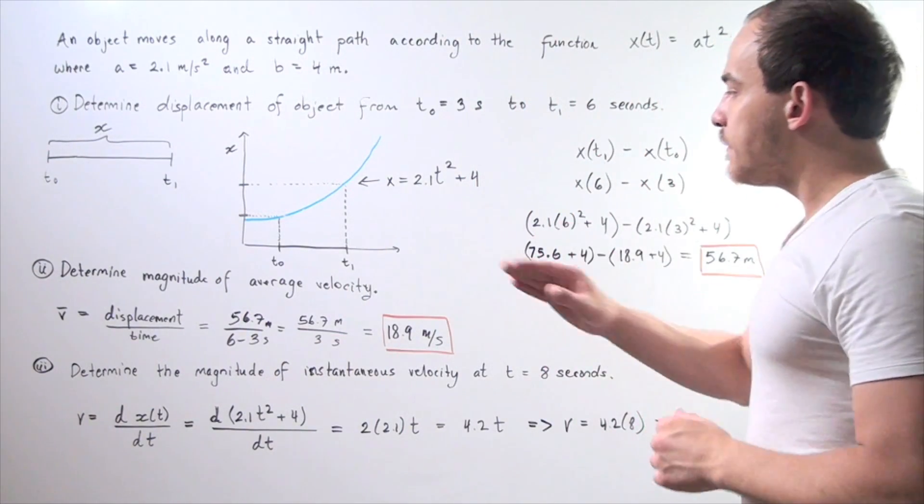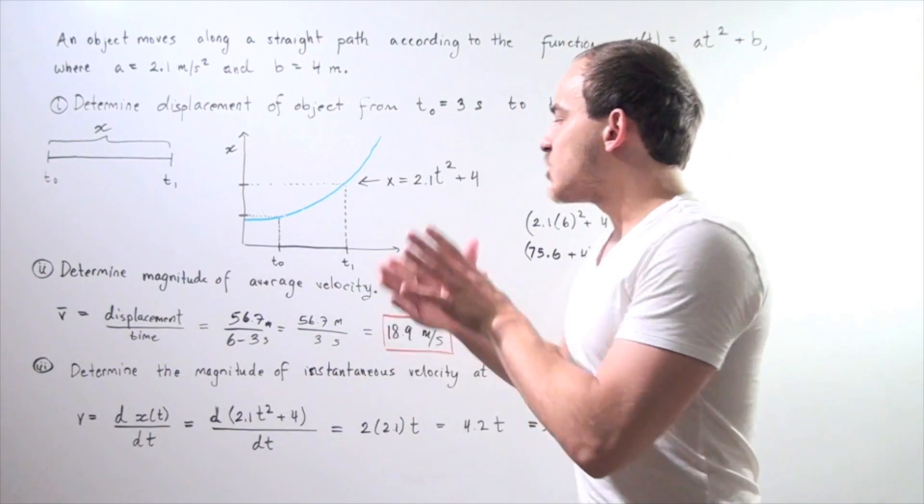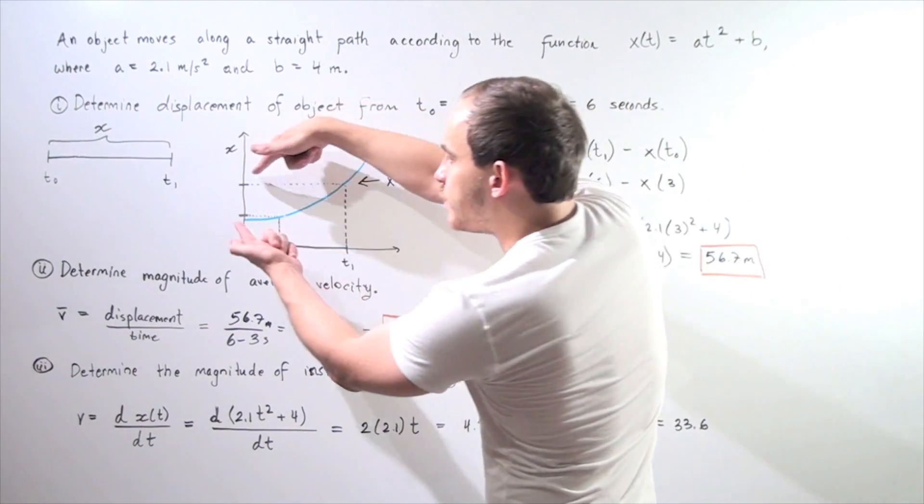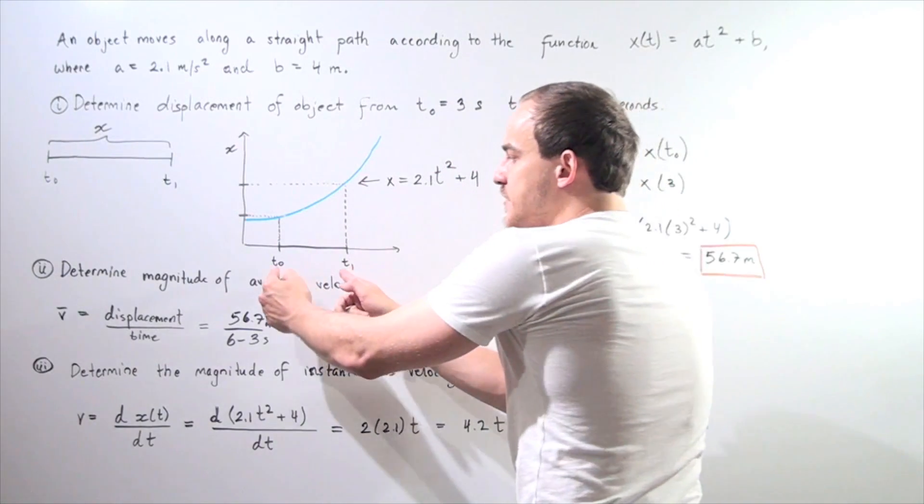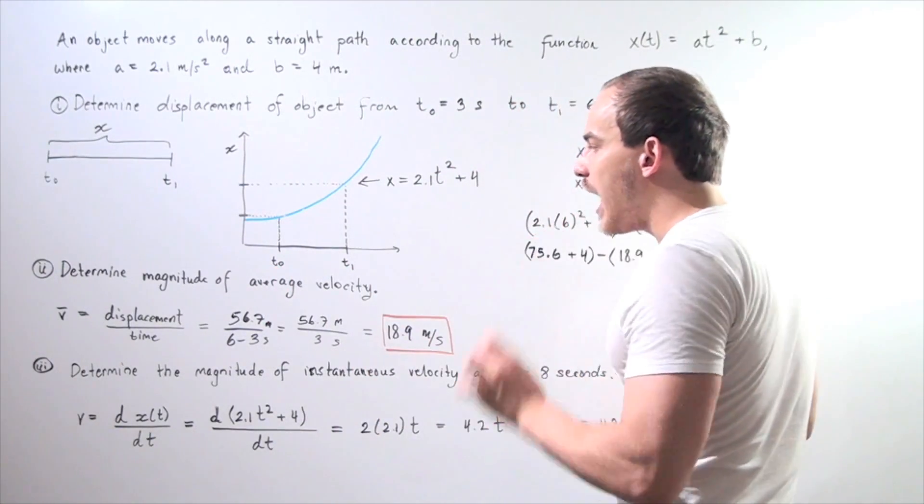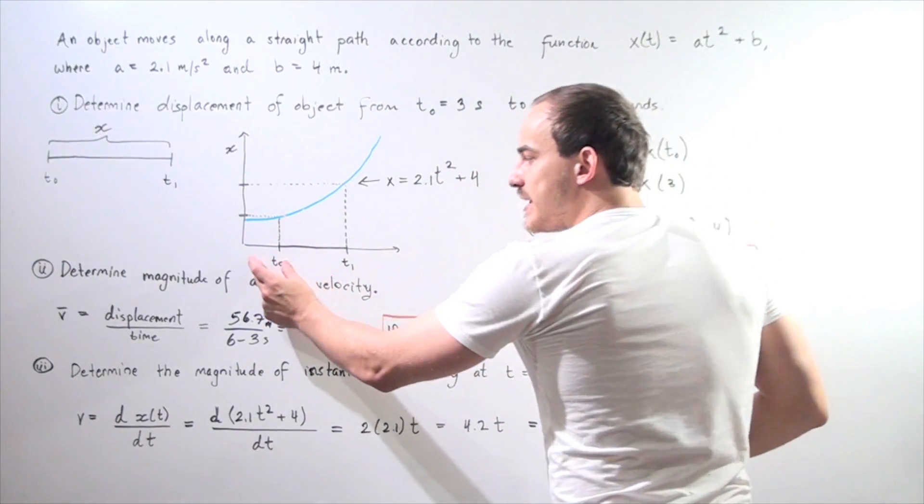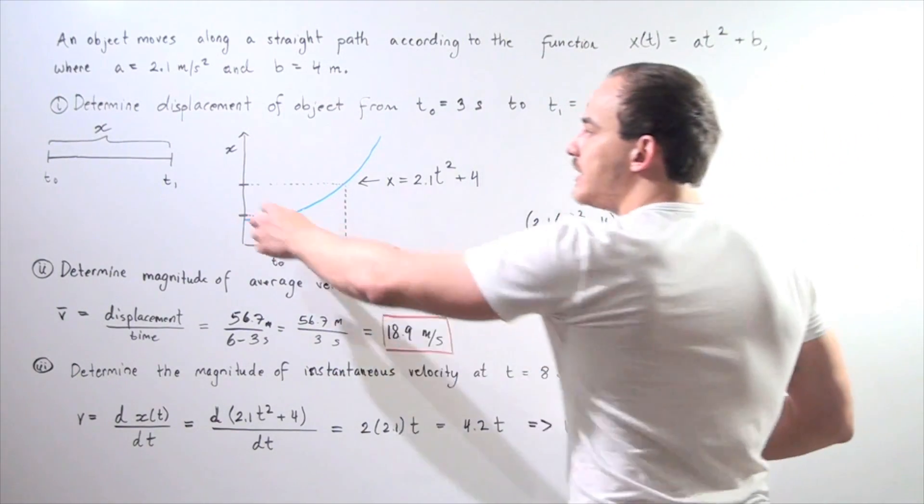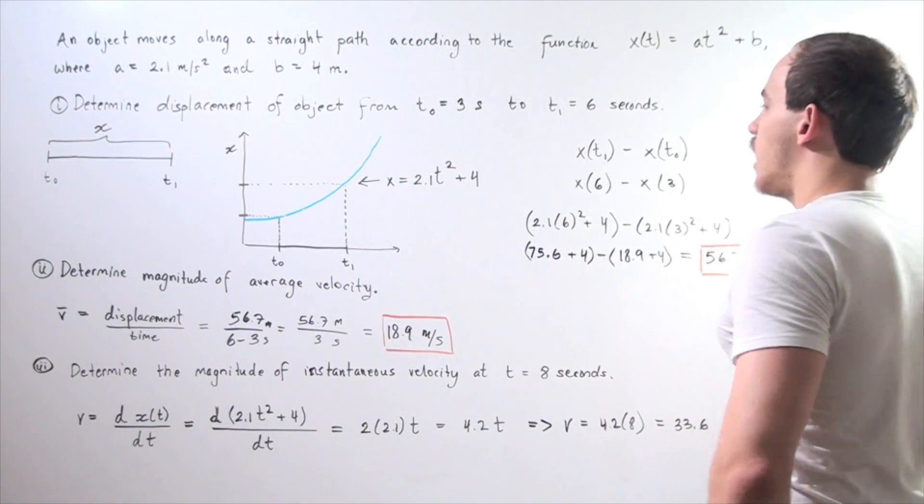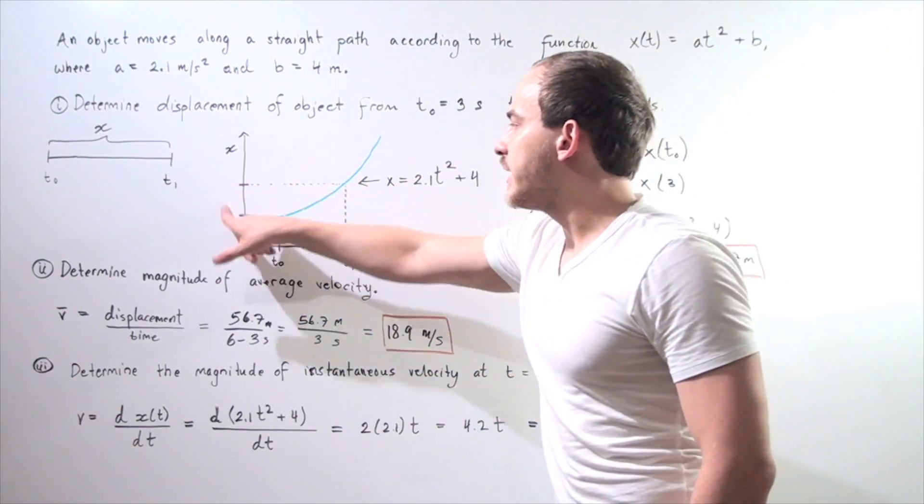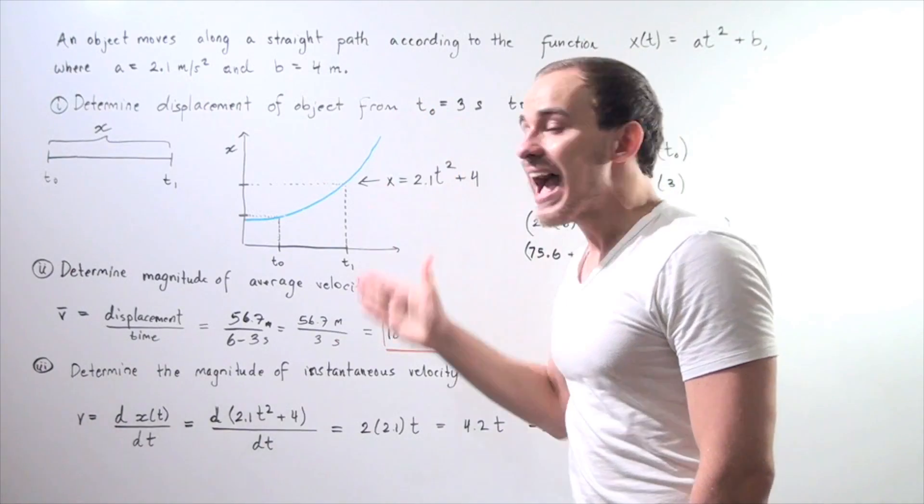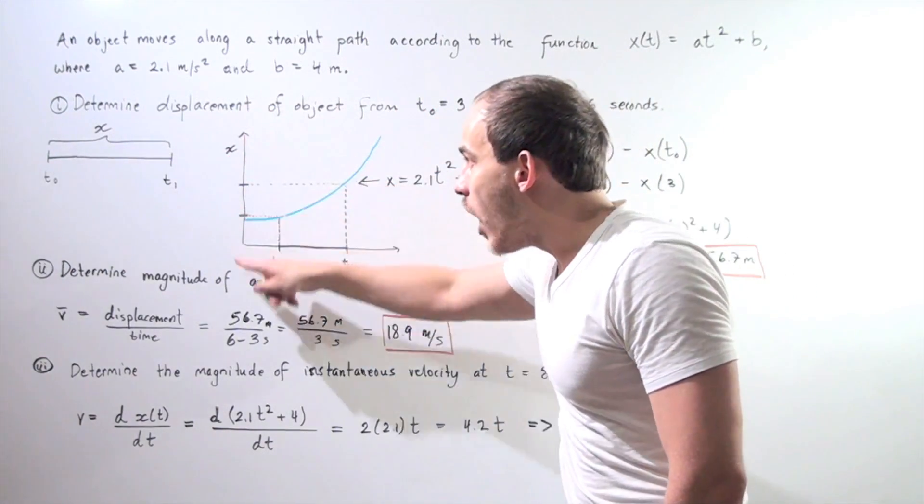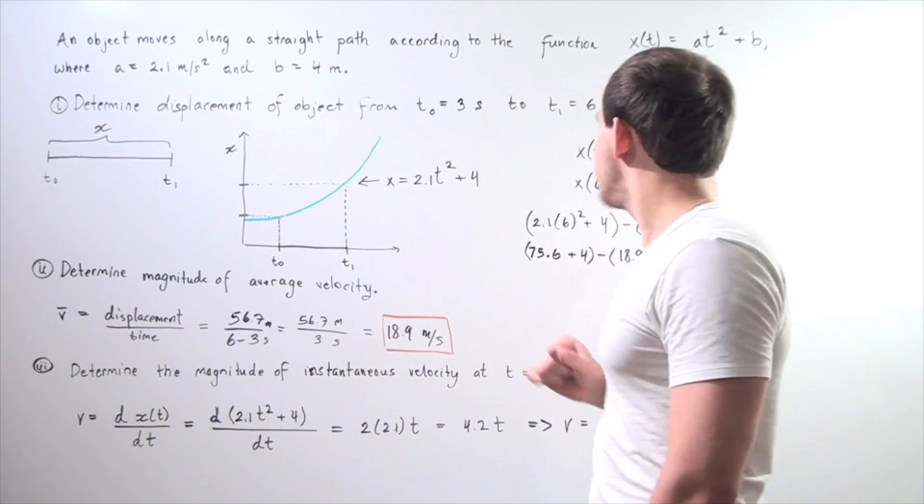The same thing goes for our t₁. In order to find our change in x, we have to find this value and that value and subtract them to find this change in displacement. Remember, x is not the x-axis. x means our displacement. This is actually the y-axis where x means our displacement.